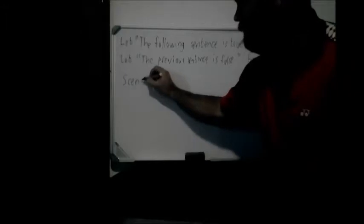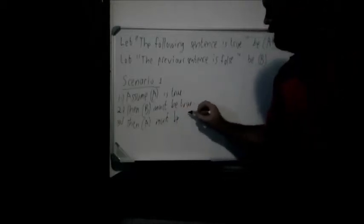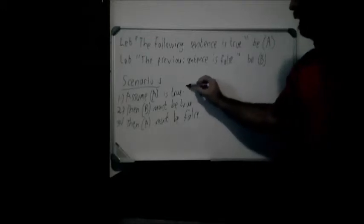Now in the first scenario, we're going to assume that the first statement is true. Statement A is, "The following sentence is true." Now if statement A is true, then B must be true. Now let's look at what B says. B says, "The previous statement is false." By assuming that A is true, we've now shown that B must be true. But B says the previous sentence is false, so therefore if B is true and the previous sentence is false, then A must be false.